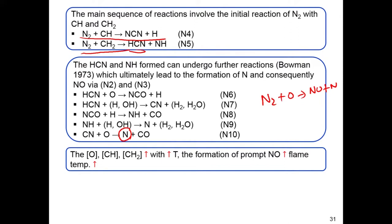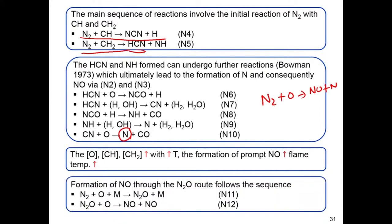This prompt NOx mechanism is also promoted with increasing temperature and requires the presence of hydrocarbon molecules. The N2O route is essentially a third-body reaction, where N2 plus an oxygen atom can react when a third body also comes in, and N2O is formed. This N2O can then react to form two molecules of NO. So this is the other mechanism by which NOx is formed.